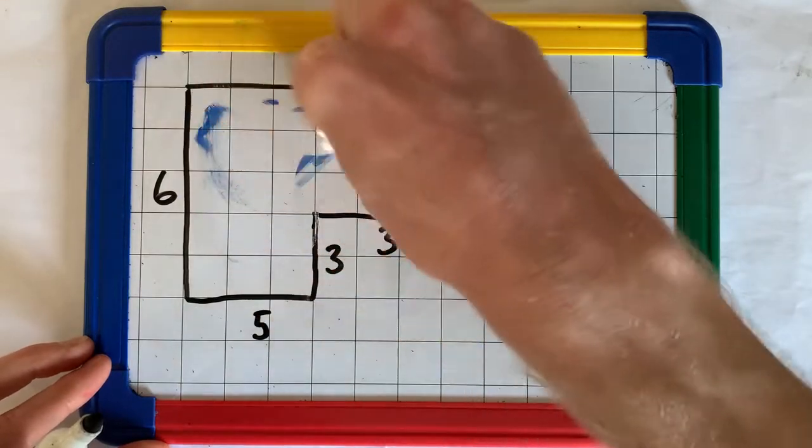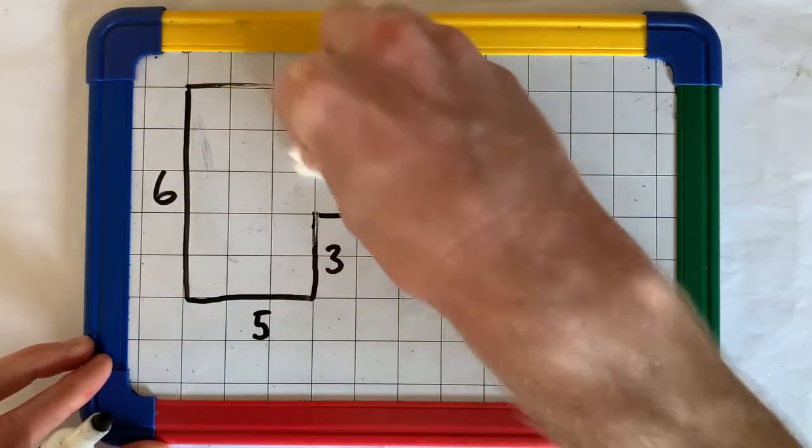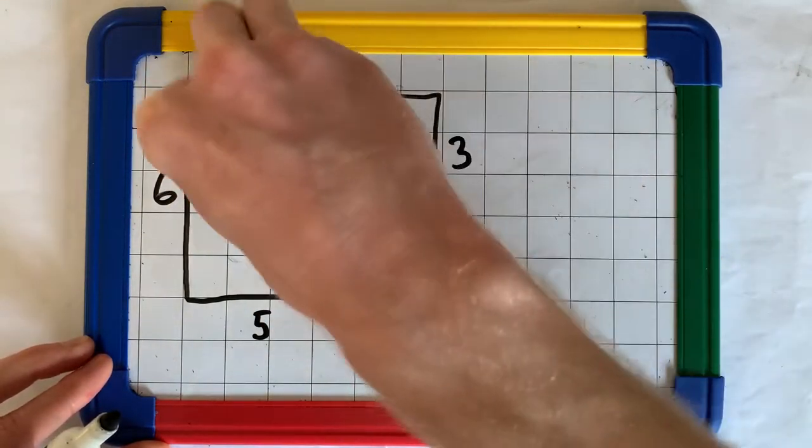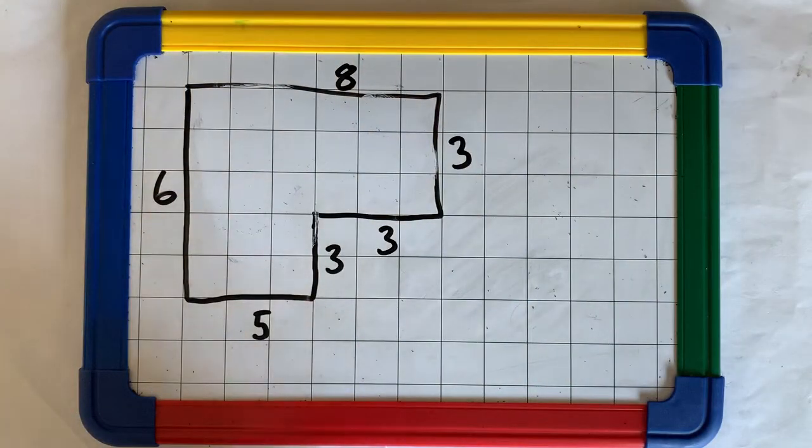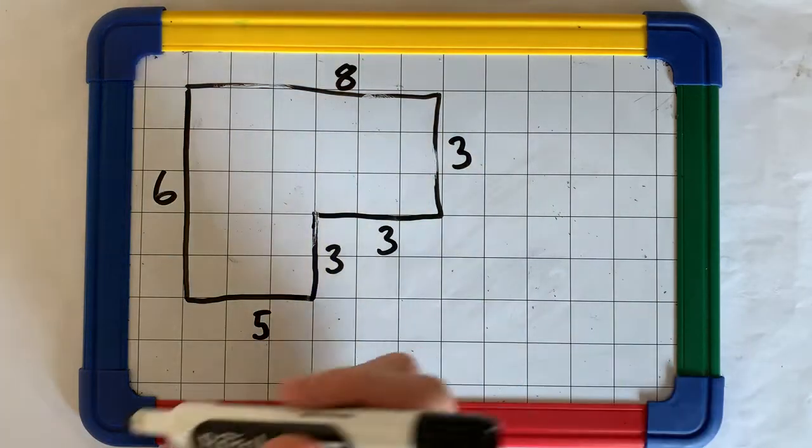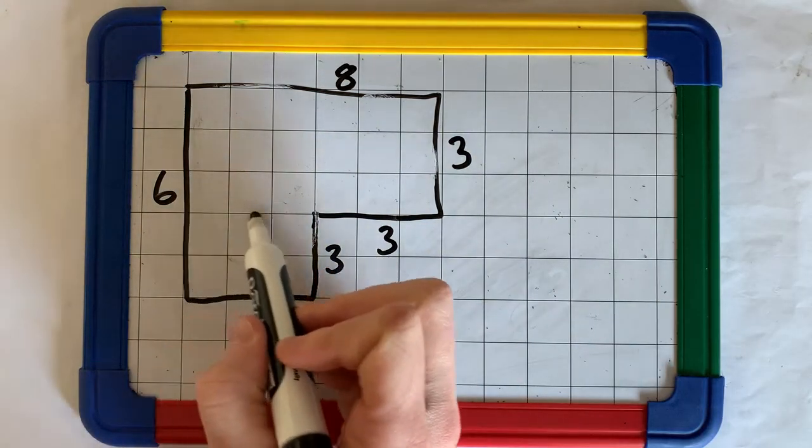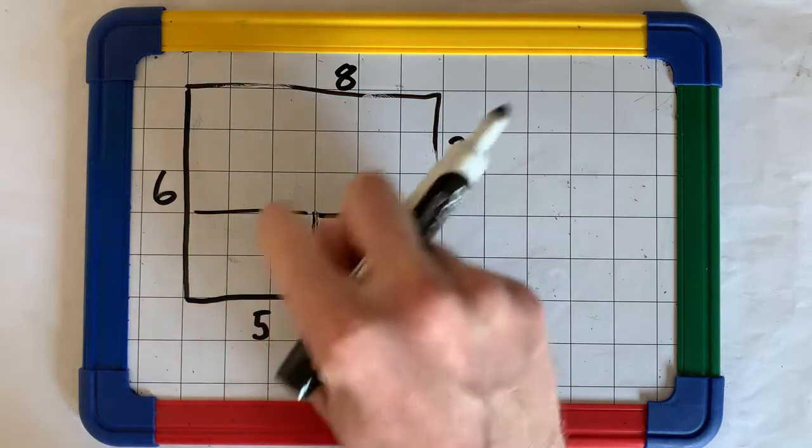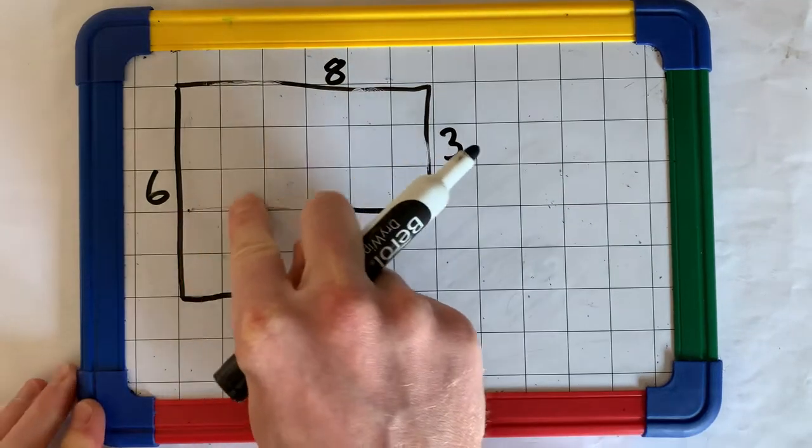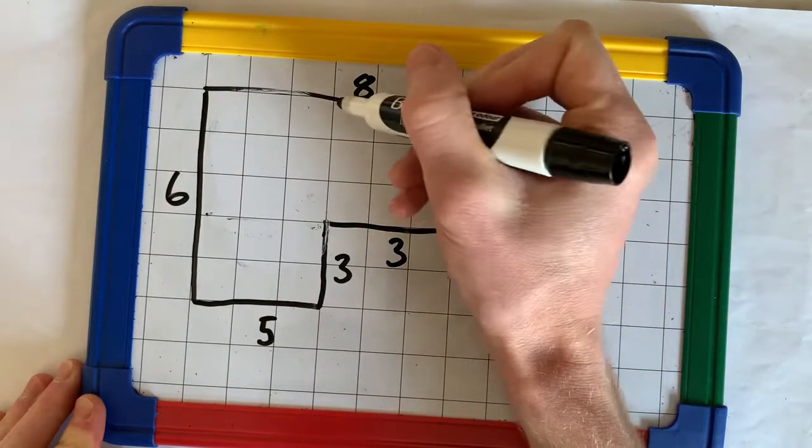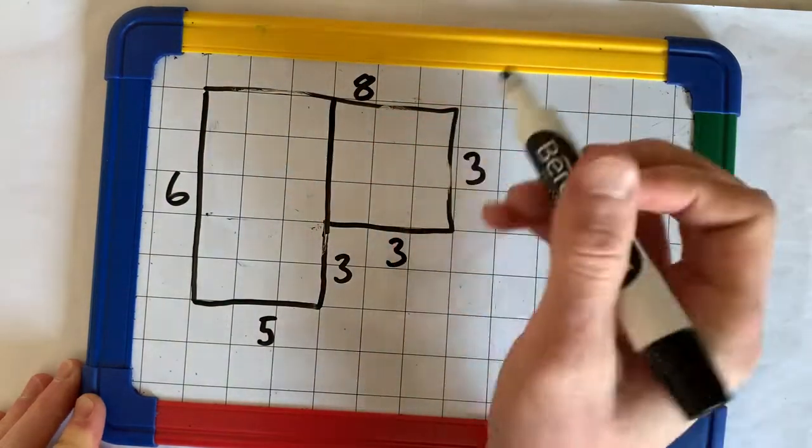When we're trying to find the area of a compound shape, it's important to split it into two shapes. Either a square and a rectangle, two rectangles, or two squares. Here we could either split it this way, so we've got two here, or we could split it this way. I'm going to split it this way.